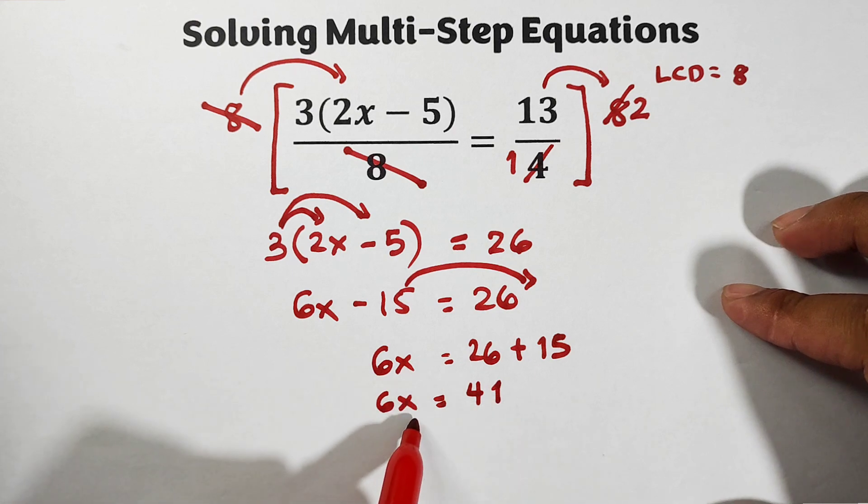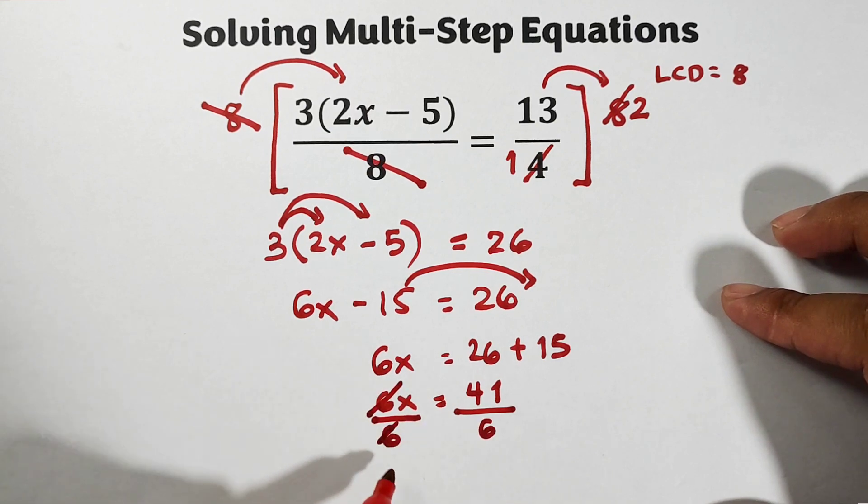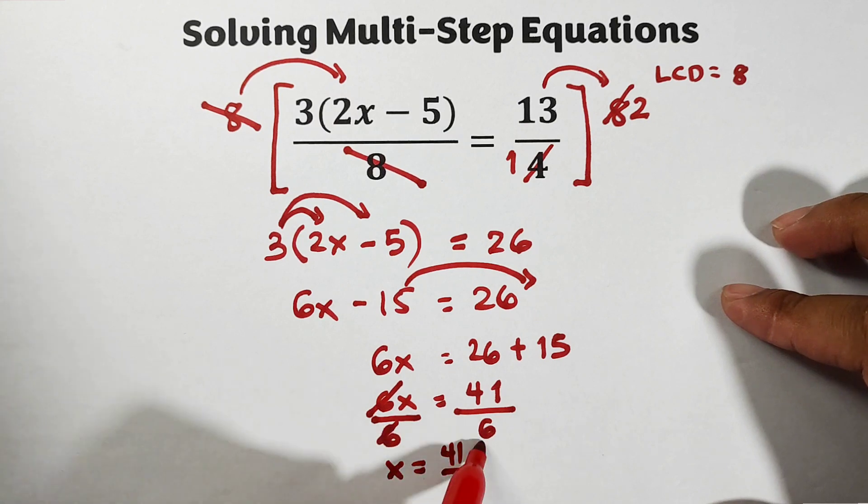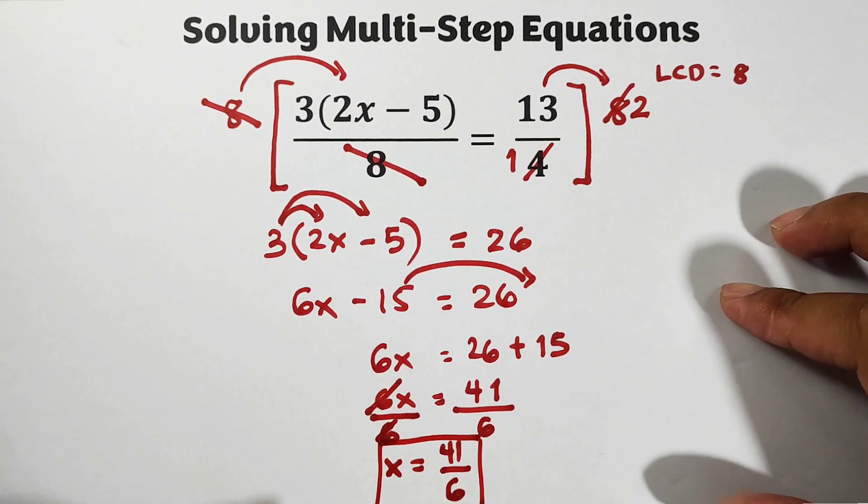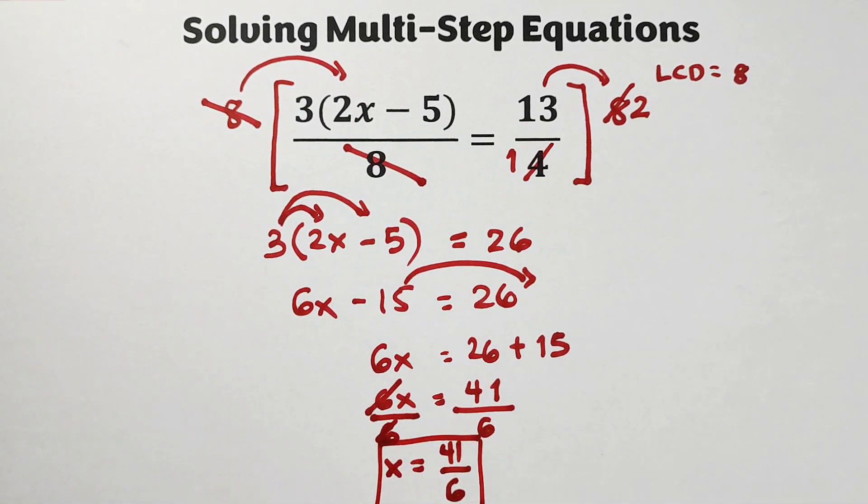41. And as you can see, all we need to do is divide this by 6 and divide this by 6. Cancel. Your x is equal to 41 over 6, and this is the final answer.